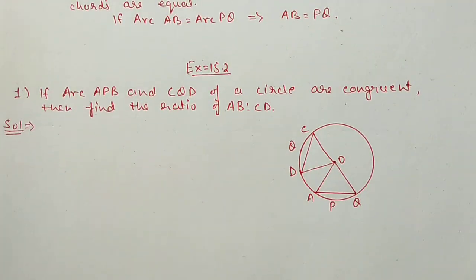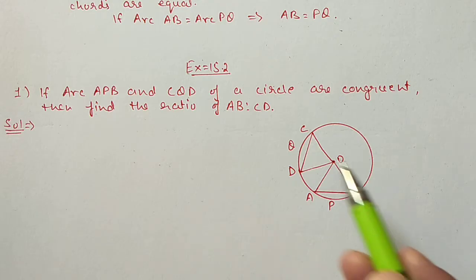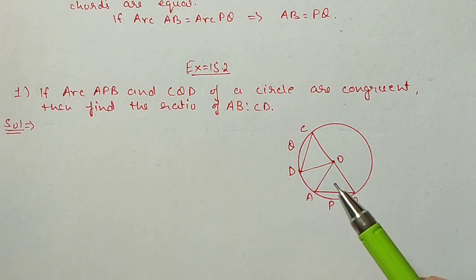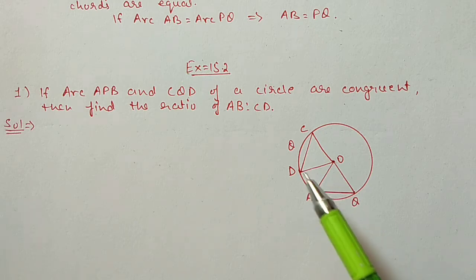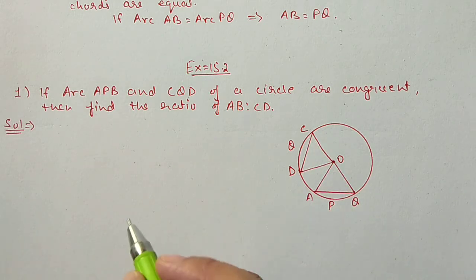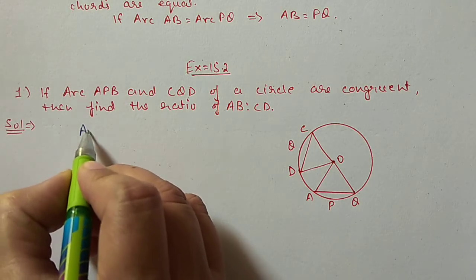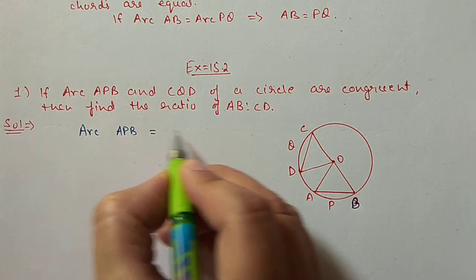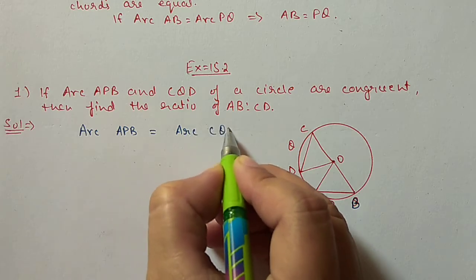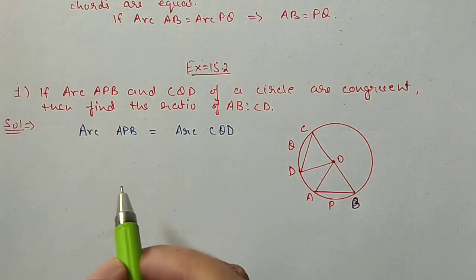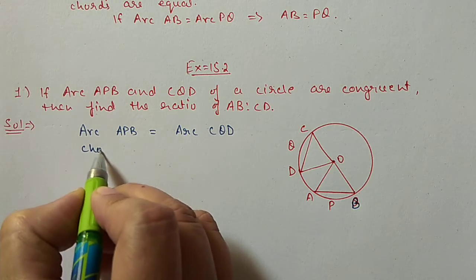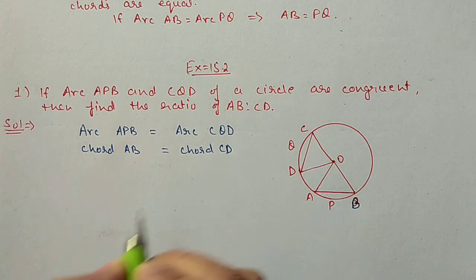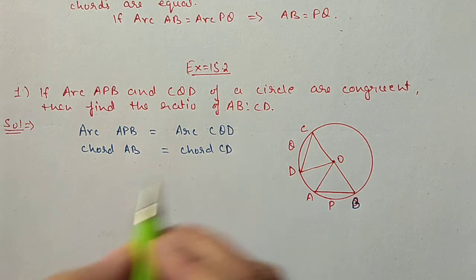Question number 1: If arc APB and arc CQD are congruent — congruent means equal — then we have to find out the ratio of AB to CD. It is given that arc APB is equal to arc CQD. If these two arcs are equal, then by the above theorem we can write chord AB will be equal to chord CD.